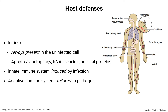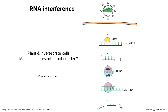Intrinsic defenses are always present in the uninfected cell. We'll talk about apoptosis and RNA silencing. Innate immunity is induced by infection, and adaptive immunity is tailored to the pathogen — the only immune defense tailored to the specific pathogen. It takes about two weeks to develop. Innate is induced nonspecifically, and intrinsic is always present. One example of intrinsic defenses is RNA interference.